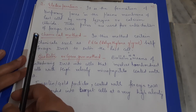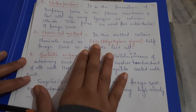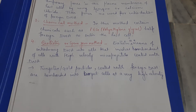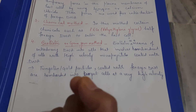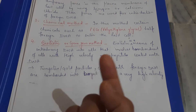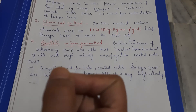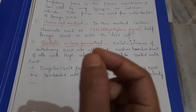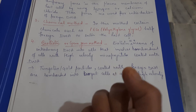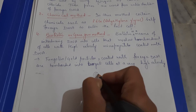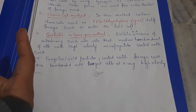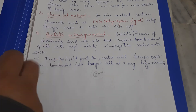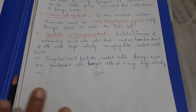The chemical method uses chemicals such as polyethylene glycol, which help foreign DNA get into the host. Another method is the ballistic or gene gun method. In this method, a particular particle is coated with DNA and bombarded at very high speed into the target host cells, thereby inserting the DNA.